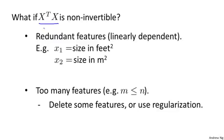Concretely, if you're trying to predict housing prices, and if x1 is the size of the house in square feet, and x2 is the size of the house in square meters, then one meter is equal to 3.28 feet, rounded to two decimals. And so your two features will always satisfy the constraint that x1 equals 3.28 squared times x2.